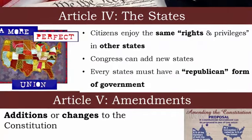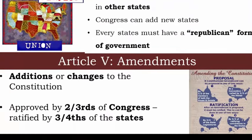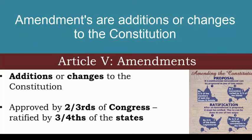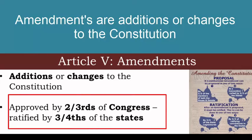Article 5 is about amendments — additions or changes to the Constitution. The framers knew there would be issues they didn't think of, so they put in a way to make changes. This is done by getting approval from two-thirds of Congress, and then the amendment must be ratified by three-fourths of the states. We're going to come back to this because we'll be covering a lot of amendments this year.